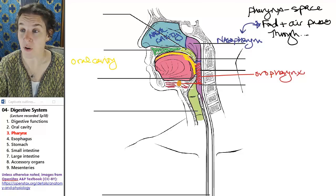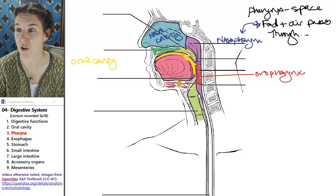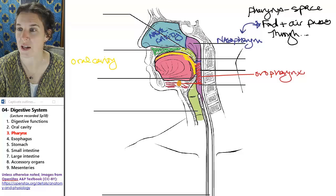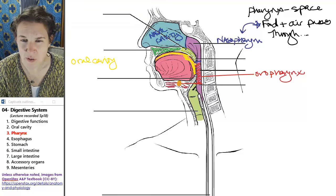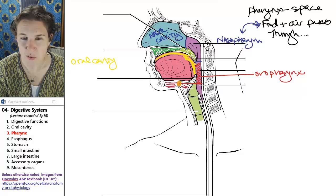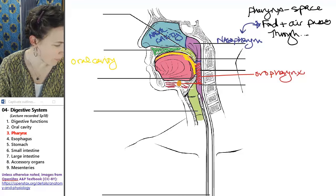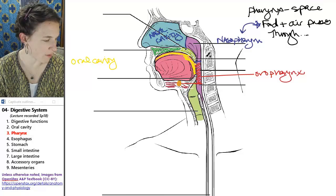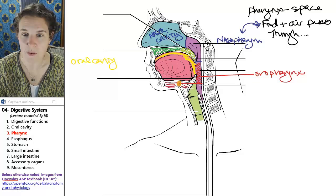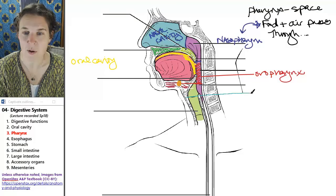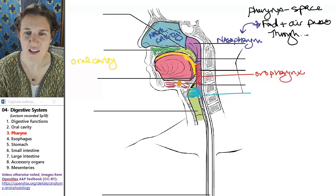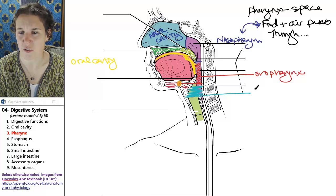Inferior to the oropharynx is a structure called the laryngopharynx. And the laryngopharynx goes to the thyroid cartilage. Is that correct? Inferior border of the cricoid cartilage, which is probably going to be right about here. So this whole thing is going to be laryngopharynx.